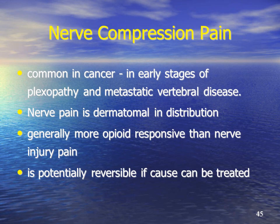Early on you can get problems with nerve compression pain. This is common in cancer and occurs in the early stages of plexopathies and metastatic vertebral disease. Pain is often dermatomal in distribution and is generally more opioid responsive than when the nerve goes on to nerve injury pain. It is potentially reversible if the cause of the pressure or compression on the nerve can be reversed or treated — for example, if a patient has radiotherapy and shrinkage of the tumour off the nerves causing the pain.